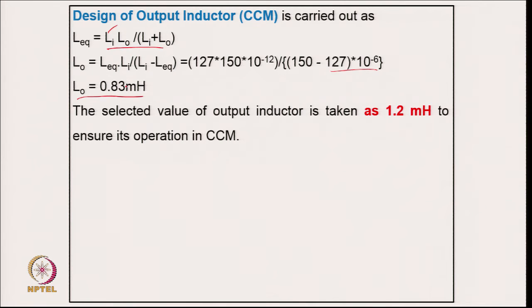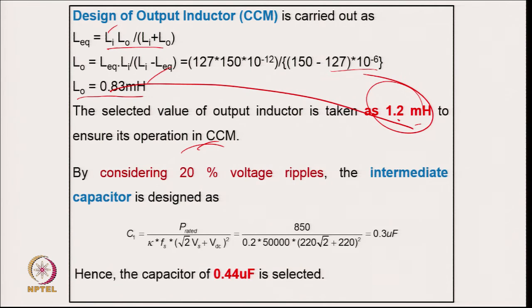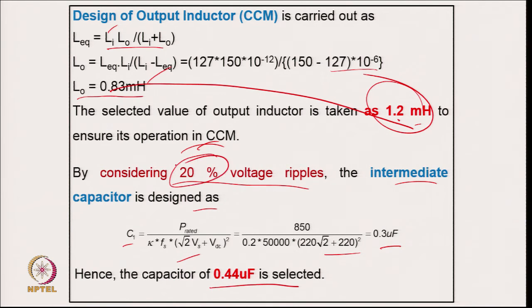From the equivalent inductor calculated earlier and the input inductor, the output inductor is found to be 0.83 mH. To maintain DCM for the input inductor and CCM for the output inductor (one component can be selected for each mode), the output inductor is selected higher than the critical value to maintain continuous conduction mode. Considering 20 percent ripple across the intermediate capacitor C1 gives a value of 0.3 μF, and 0.44 μF is selected to ensure ripple stays below 20 percent.